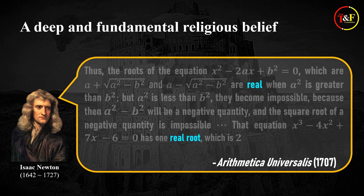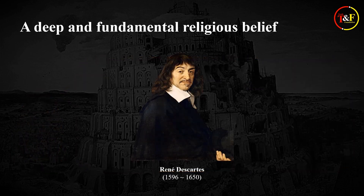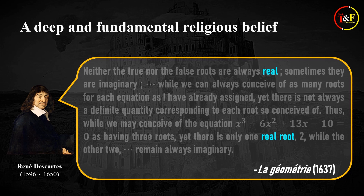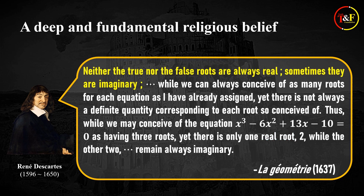And it dates all the way back to the 17th century philosopher and mathematician Descartes. Actually, he is the one who started this tradition of using the word real to refer to rational and irrational numbers. More precisely, he refers to rational and irrational roots of an equation as real roots in his book titled Geometry. It is worth looking at his remark closely. He wrote: "Neither the true nor the false roots are always real. Sometimes they are imaginary. While we can always conceive of as many roots as I have already assigned, yet there is not always a definite quantity corresponding to each root so conceived of. Thus, while we may conceive of the equation x³ − 6x² + 13x − 10 = 0 as having three roots, yet there is only one real root, two, while the other two remain always imaginary."